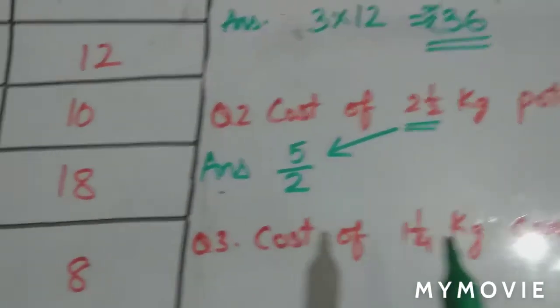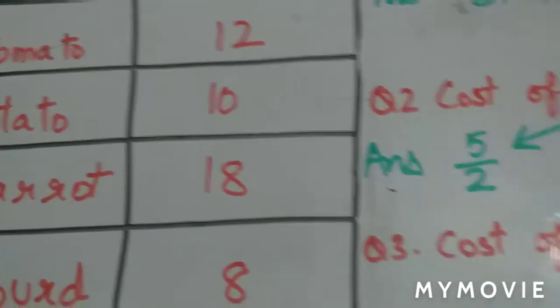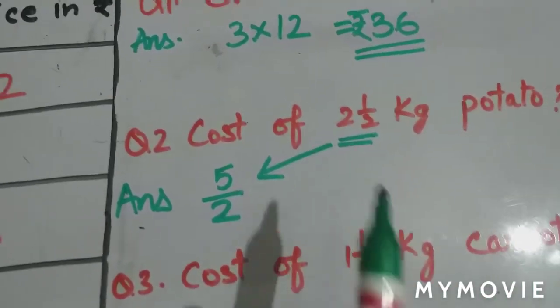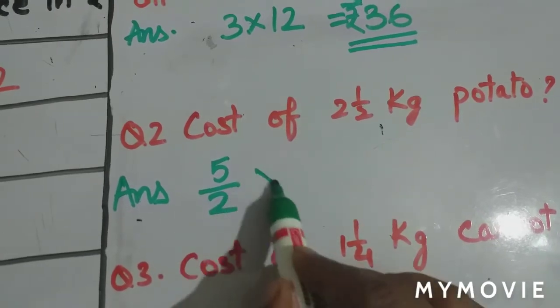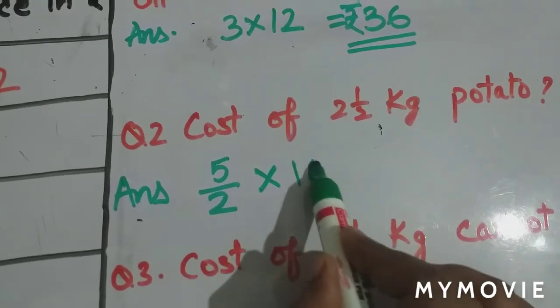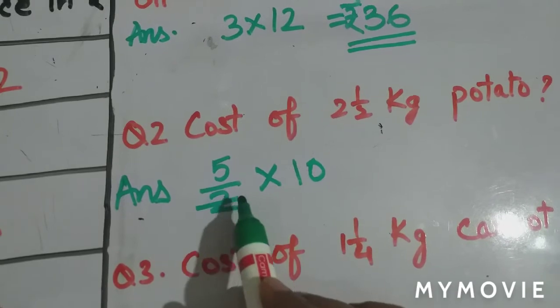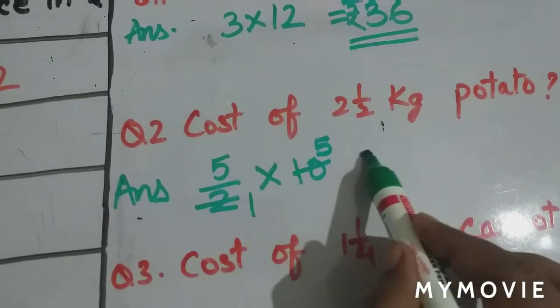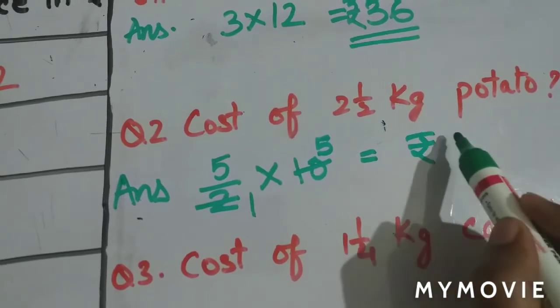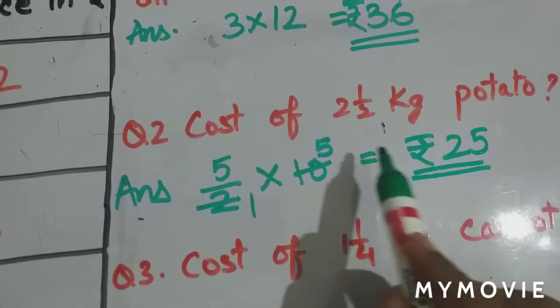Now potato cost is 10 rupees. We simply have to multiply the amount bought in kgs multiplied by the cost which is 10 rupees. Now we reduce this: 2 ones are 2, 2 fives are 10, and multiply 5 into 5 which will be 25. So 25 rupees is the cost of 2 and a half kgs of potato.